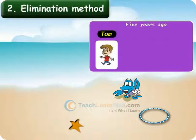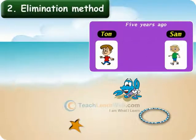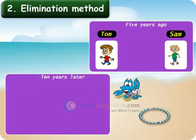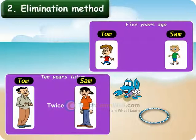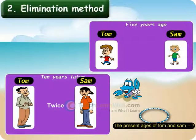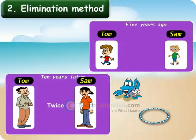Five years ago, Tom was thrice as old as Sam. Ten years later, Tom will be twice as old as Sam. Can you people tell the present ages of Tom and Sam? Children, consider the present age of Tom as X and that of Sam as Y.